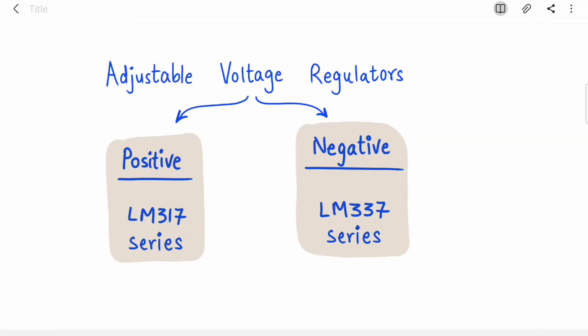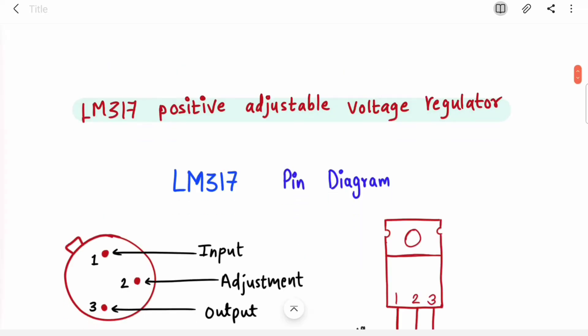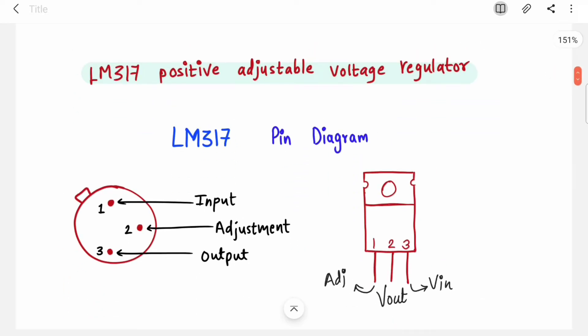There are mainly two series: LM317 if you want positive voltage and LM337 if you want negative voltage. In this video we are going to focus on LM317 positive adjustable voltage regulator because this is the most widely used IC. We will see its pin diagram and connection diagram.